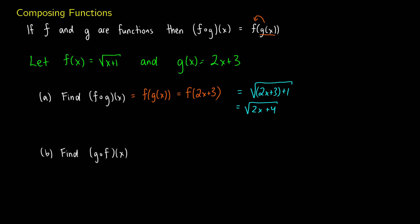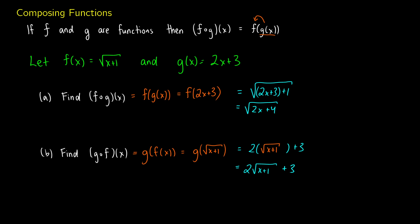Now if we want to find g of f of x, it's very similar but we're doing the opposite. We take our function g and put the square root of x plus 1 into any position where x is. So if g is 2x plus 3, we stick f — the square root of x plus 1 — into every place where x was. Our final answer is 2 times the square root of x plus 1, plus 3.